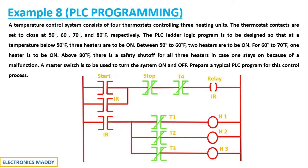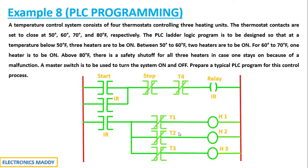Let me start the process by turning on the system. If you press the start push button, current starts flowing through this path and the entire rung gets energized. Consequently, the internal relay (IR) will get energized. According to the concept of latching, the same IR address is used here as well, so since this goes high, this will also go high. Since all of them are turned on, current flows through each branch and all the heating units will be turned on. This is for temperature below 50°F — the first condition is satisfied.